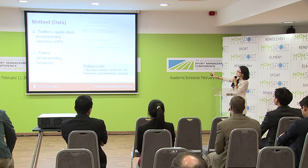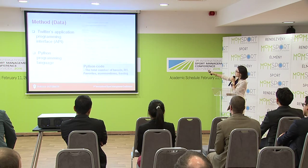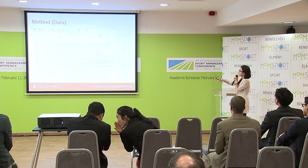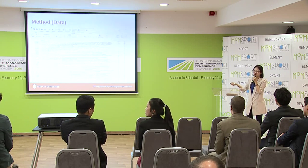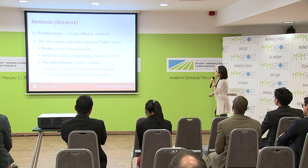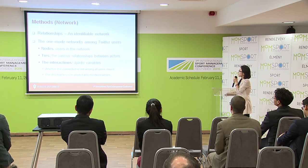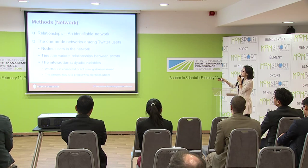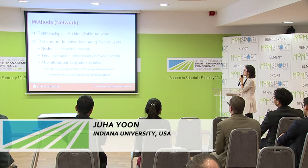I use Python programming language through the Twitter application programming interface. That's why I took a computer science class last semester to create the codes. Using those codes, I collected all of the data from the Youth Olympic Games and Olympic Games Twitter webpages. In order to find an identifiable network, I use social network analysis where users in the network are represented as nodes and various relationships between actors are represented as ties.